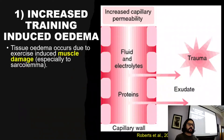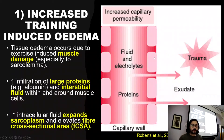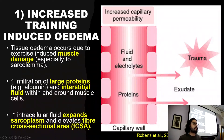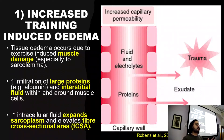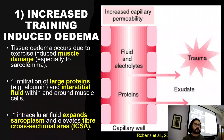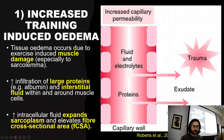We get this edema — increased amounts of water in the muscle — and that contributes to the pump. We also have large proteins like albumin going into the area, attracting even further water, so we get more water going around the myofibrils. The sarcoplasm expands and the cross-sectional area of the muscle increases. But this is transient — this is what you would see when you take your top off in the changing room. By the time you get home, the fluid has gone back out of the cell and you've lost that pump.